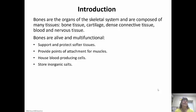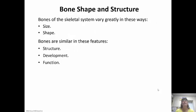Bones have a lot of different functions. They support and protect the softer tissues — like our rib cage surrounds our lungs and heart to protect them. They provide points of attachment for muscles so we can move, our muscles pulling against our bones. They also house blood-producing cells and store some inorganic salts. Bones vary greatly in size and shape, but they share common structure, development, and functions.